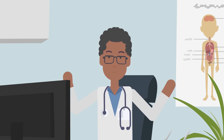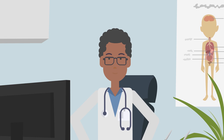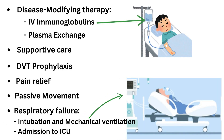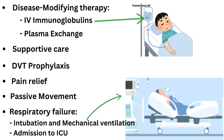Treatment of Guillain-Barré syndrome involves a combination of disease-modifying therapy, supportive care, and preventing and managing complications. Disease-modifying therapy involves the use of intravenous immunoglobulins or plasma exchange to remove those antibodies from the blood. Supportive care includes monitoring of breathing, heartbeat, and blood pressure. Deep vein thrombosis prophylaxis is given to prevent blood clots due to immobility, and pain relief is required for neuropathic pain. Passive joint movement is recommended from onset. In very severe cases, respiratory failure can occur and the patient may need intubation, mechanical ventilation, and admission to the intensive care unit.